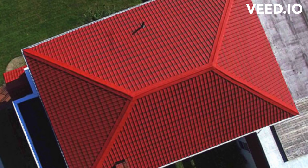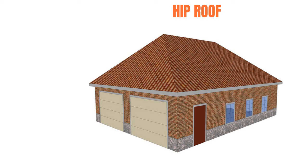This is the top view of the hip roof, and as you can see it has hip ends on both sides. On this hip roof we have a length of 15 meters and a width of 6 meters. These dimensions are inclusive of the eaves and overhangs.